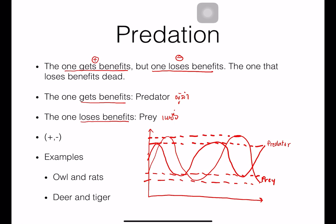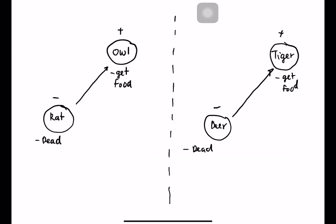An example of predation is an owl and a rat, and a tiger and a deer. The owl gets the benefit — food — but the rat gets dead, so it loses benefit. Plus and minus. The tiger gets food from the body of the deer, and the deer gets dead — that is the loss of benefit.